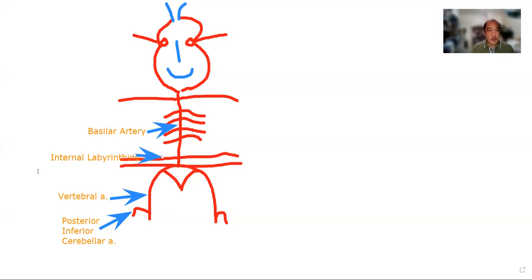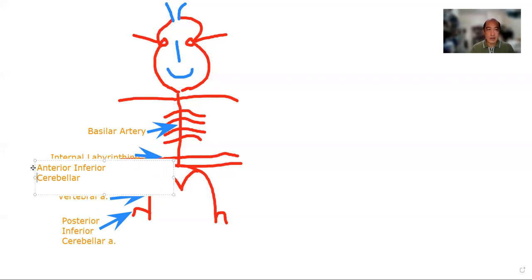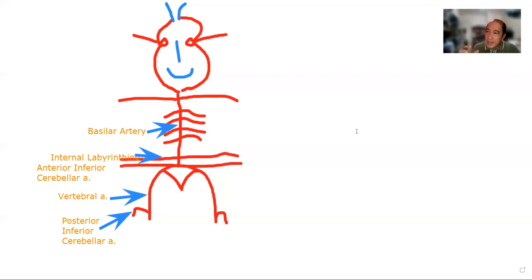If there's a PICA, there's also what's called an AICA — anterior inferior cerebellar artery. That's always the counterpart. You will find out later why it's called 'inferior.' One key clue: you name the artery based on the organ it supplies and the location relative to that organ. That's why you have inferior, posterior, anterior — it's relative to the organ being supplied.